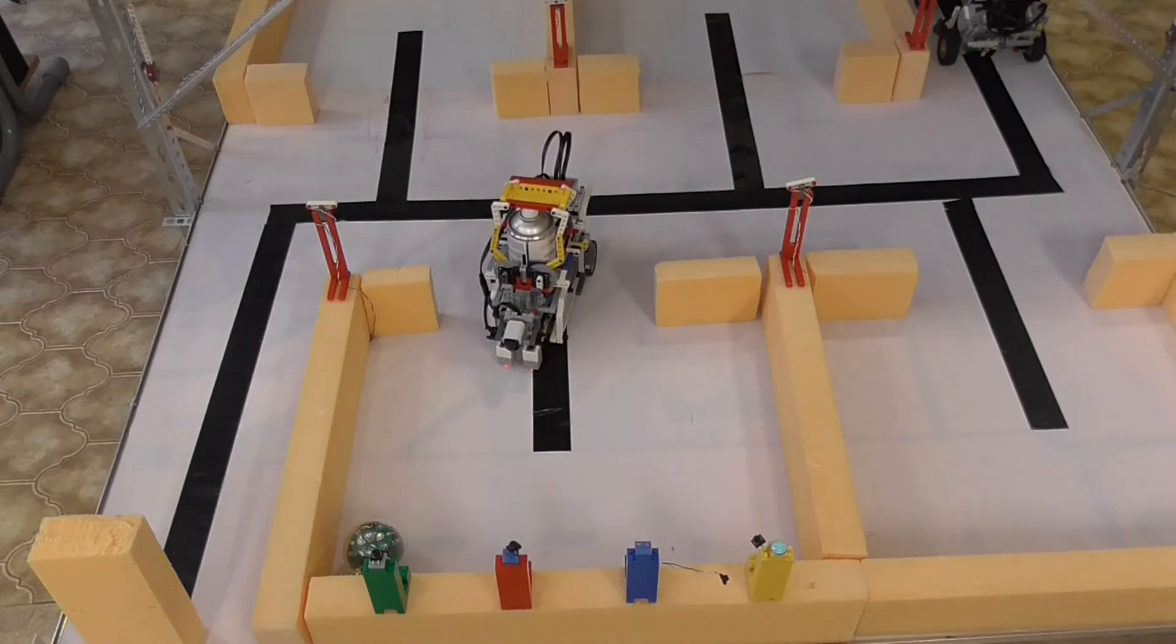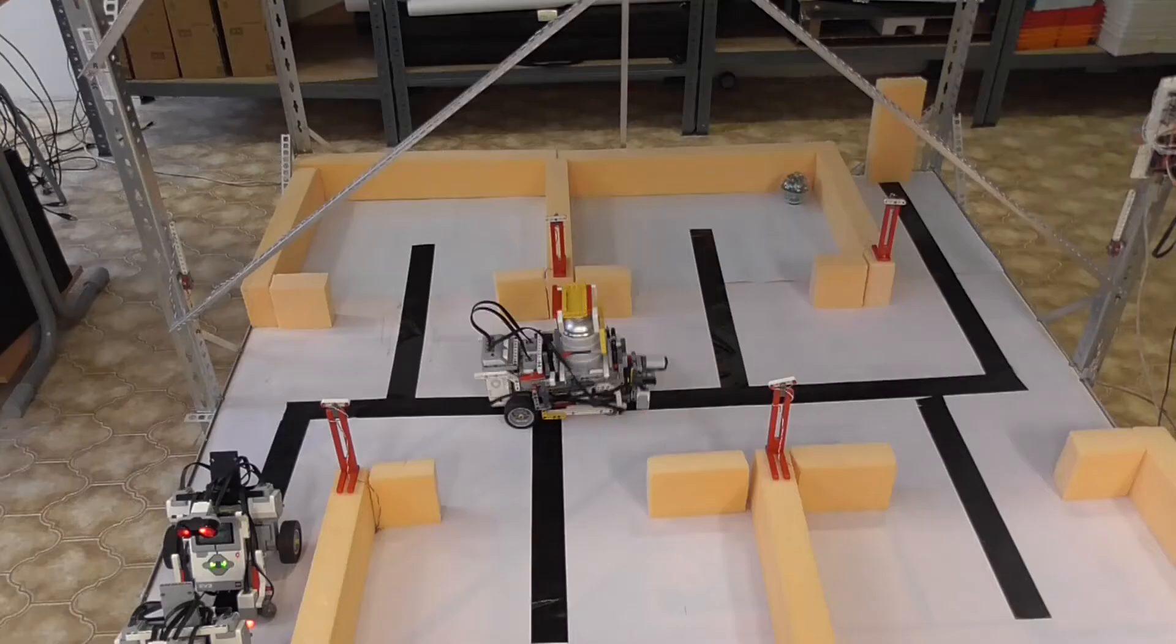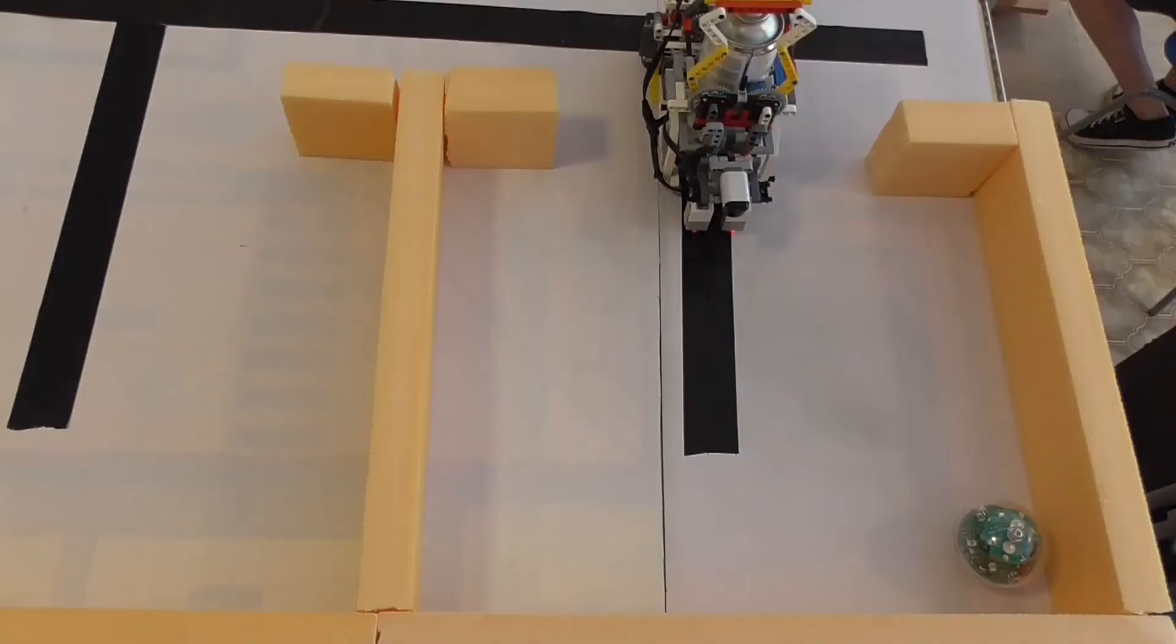Once it reaches the room, the robot enters and finds the fire with the help of its sensor. After that it approaches the fire and extinguishes it.